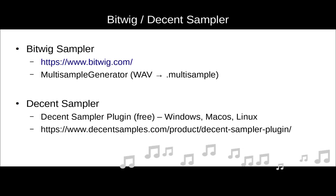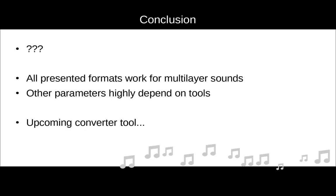As you might know, I'm a big Bitwig fan, so Bitwig's sampler can read its own format. I also wrote a tool called Multi-Sample Generator — you'll find tutorials on my channel — which can import several waveforms and automatically create a multi-sample based on the naming of those files. Decent Sampler is a freely available plugin for its format, available across a broad range of operating systems.